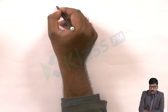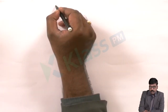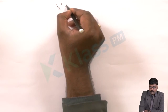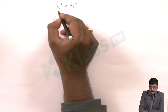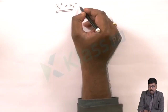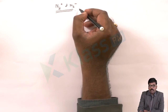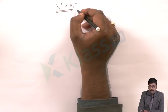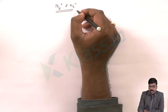Today we will see the molecular orbital diagrams of N2 plus and N2 minus. The molecular orbital diagrams of N2 plus and N2 minus are the same as nitrogen. We will work out the electronic configuration and then write the bond order and magnetic properties.